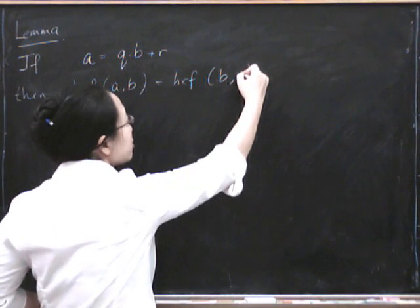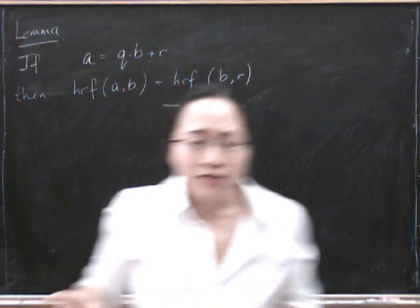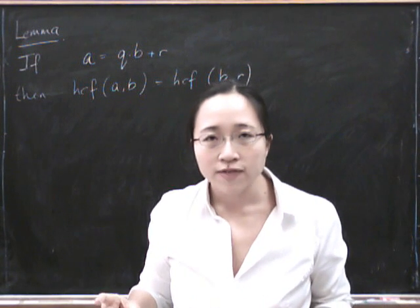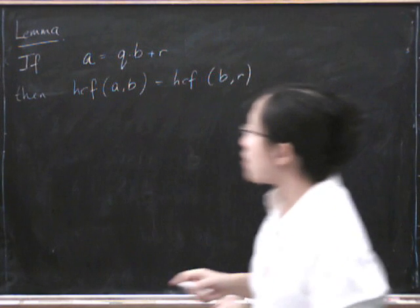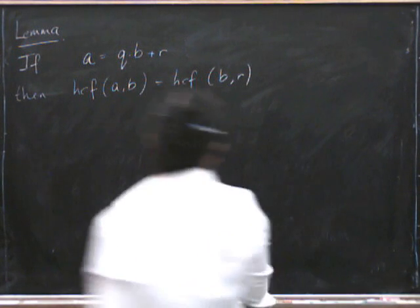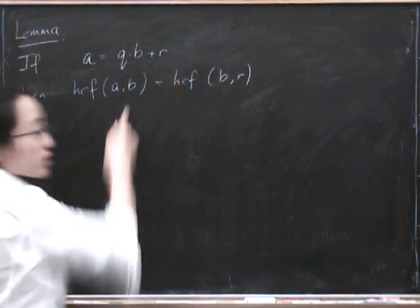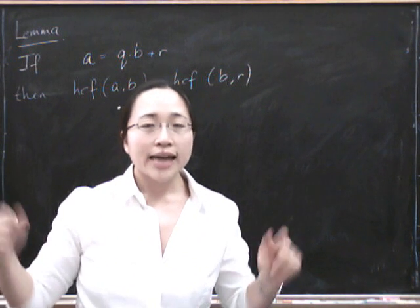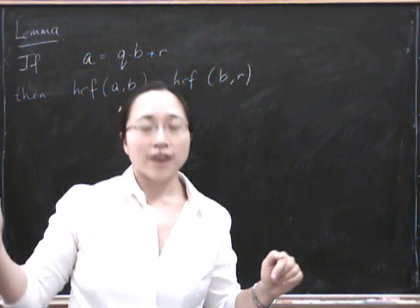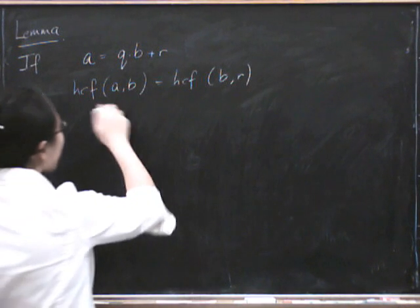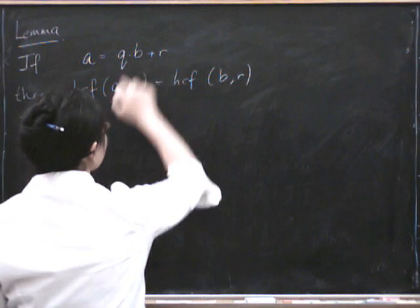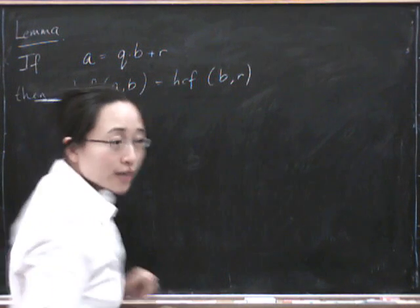So in order to prove this, we have to very carefully remember what the definition of highest common factor is. So I'll just remind you now, in case you've forgotten, so a highest common factor is something that is a factor of both these numbers, and moreover, any other factor divides it. So let's check that both of these pairs of numbers have the same highest common factor.